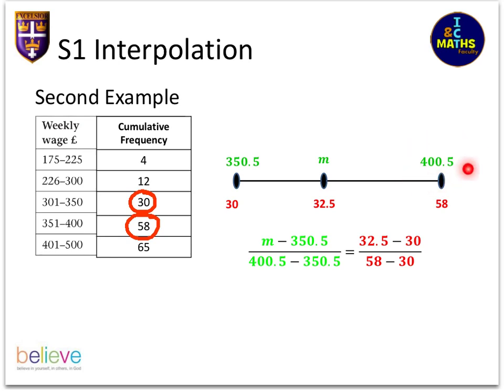But we do have to treat it as continuous because it's grouped. So I've had to adjust those class boundaries. It's also just easier to calculate if you keep M on the top, so M for median, that is.